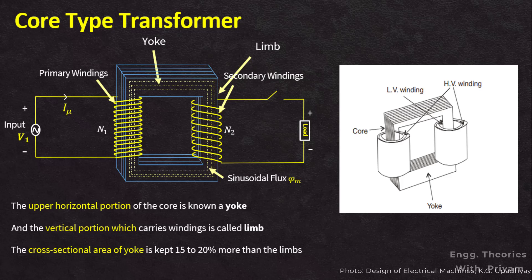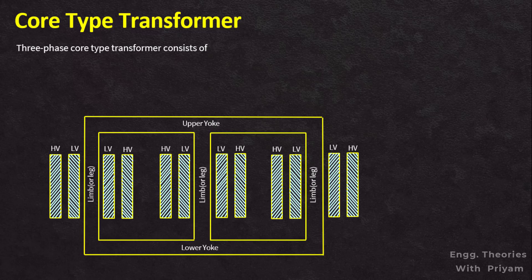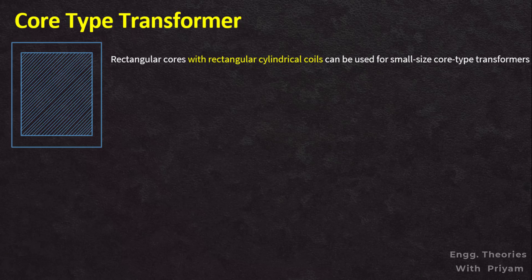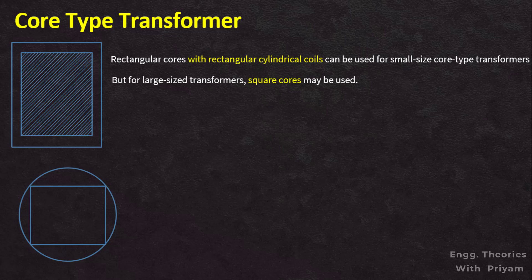Half of each winding is placed side by side or concentrically on either limb or leg of the core. A three-phase core type transformer consists of three cores and two yokes at the top and the bottom; LV and HV windings of one phase are wound on one core. Rectangular cores with rectangular cylindrical coils can be used for small size core transformers, but for large size transformers, circular cylindrical coils are preferred.